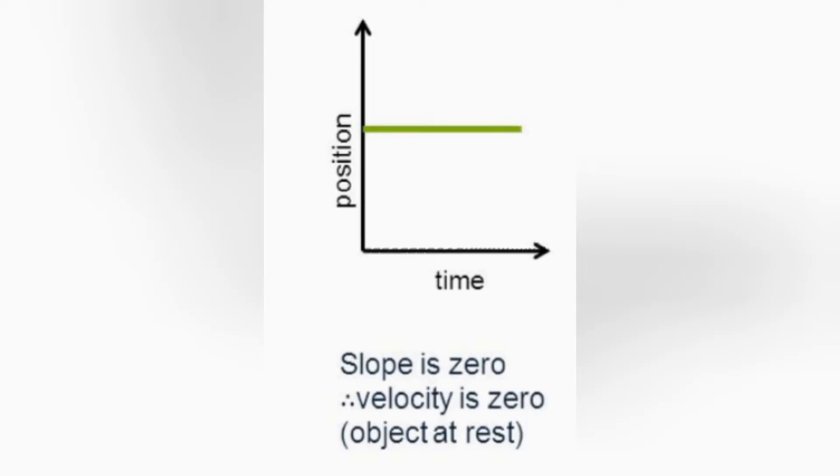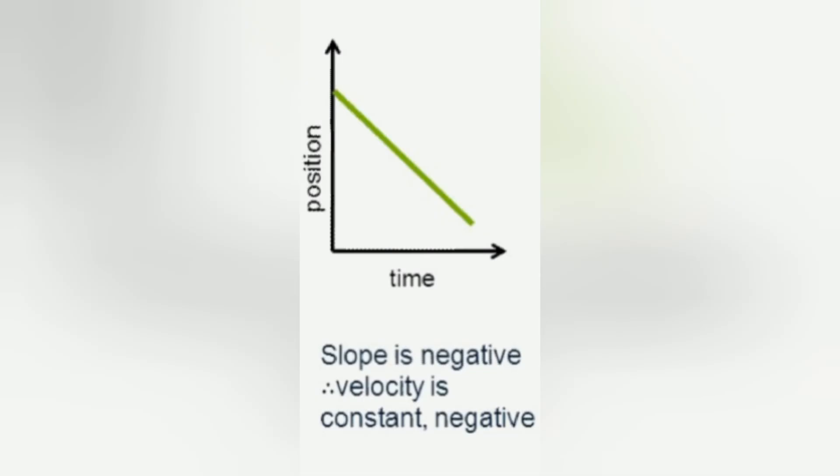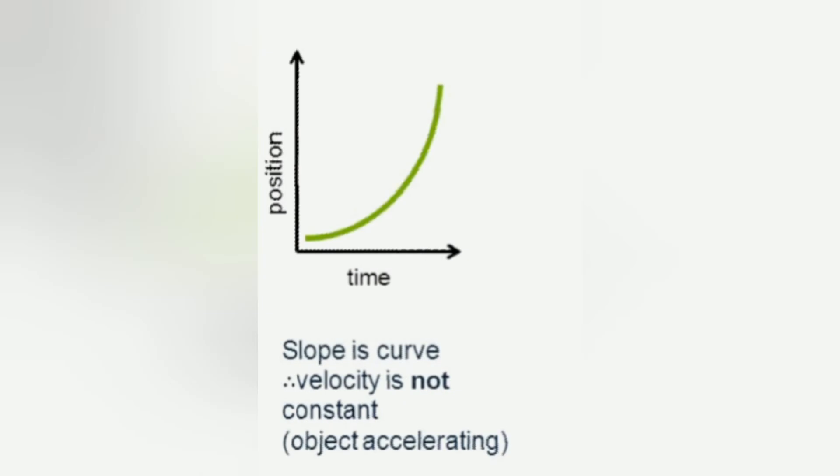In this graph, as you can see, the position does not change with respect to time. This shows that velocity is zero and the object is at rest. In this graph, you can see that the position is uniformly increasing with increase in time. So, here the velocity is constant. Here you can see that the position is continuously decreasing uniformly with the increase in time. Here as well, the velocity is constant. In the previous two cases, you saw that the velocity was constant and thus acceleration was zero. But in this case, position changes non-uniformly with time and thus velocity is not constant.